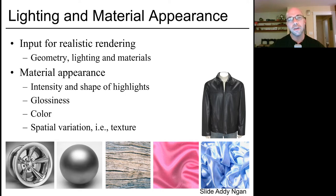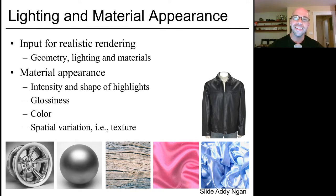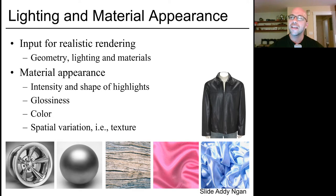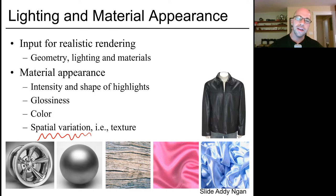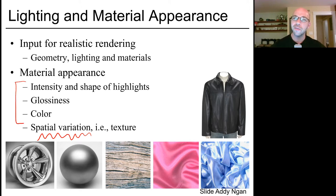Material appearance is determined by a number of different factors. Just looking at different objects around us, we can see there's a huge variety in terms of the intensity and shapes of the highlights you see — the specularity, glossiness, obviously the color, and also some spatial variation. The same object may have different textures as you move from one point on the surface to the next. We'll cover spatial variation in our next lecture on texture mapping. Today, we'll focus on how to capture different highlight shapes and types of glossiness.